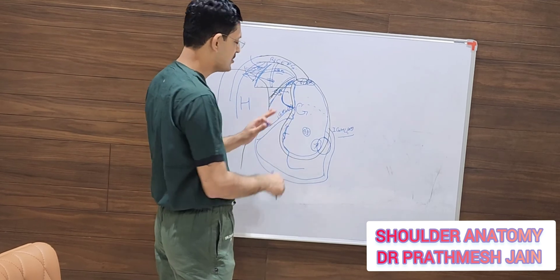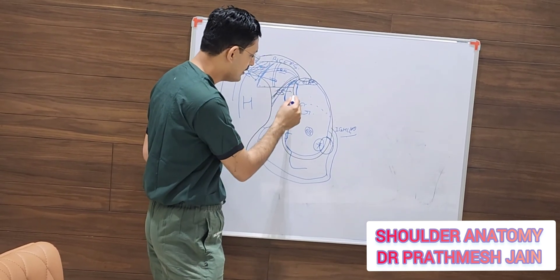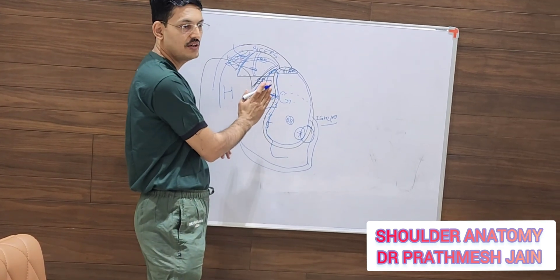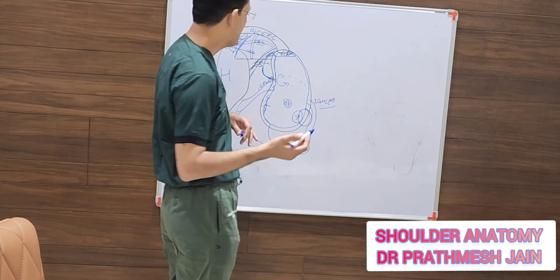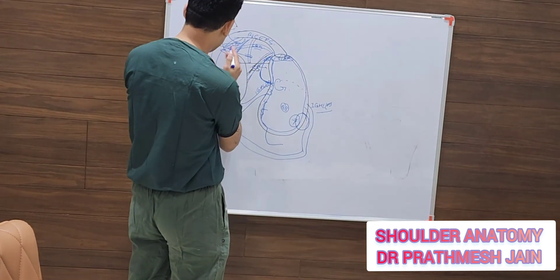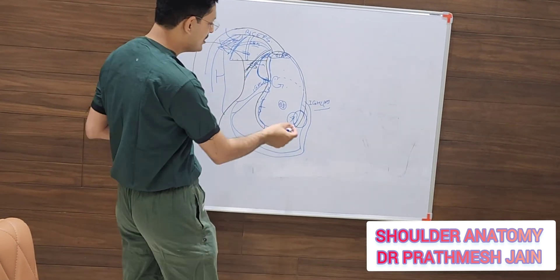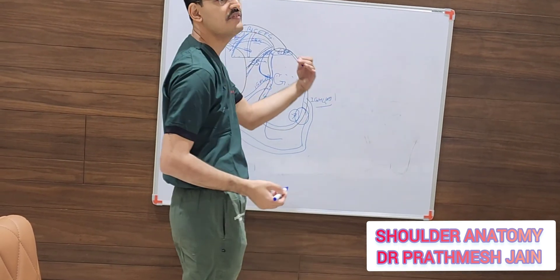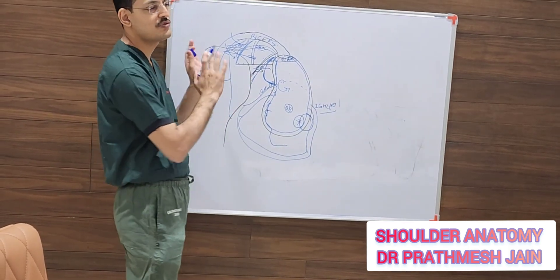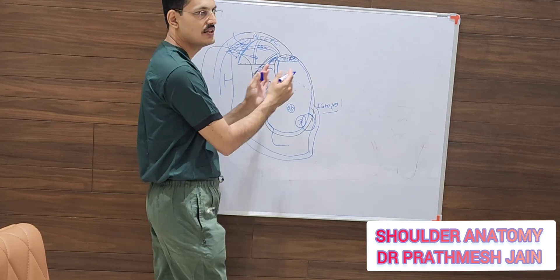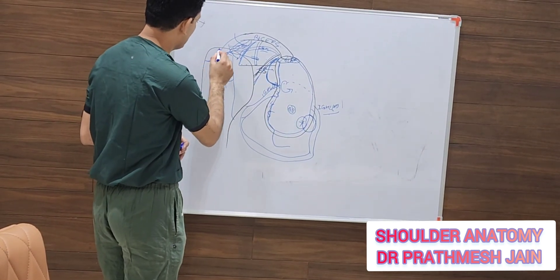The ALPSA lesion is a capsulolabral tear attached on the medial aspect of the neck. HAGL lesions occur when this capsular complex is detached from the humerus. If the posterior one is detached, it is called a reverse HAGL lesion. These are rare, accounting for about two to three percent of total lesions.